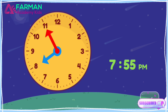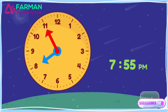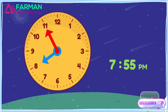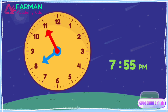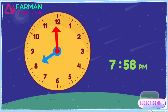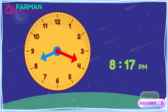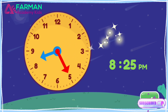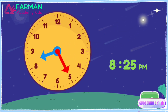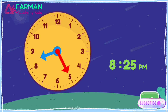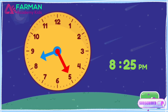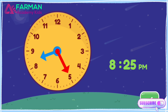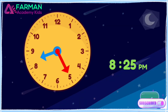Move the minute hand on the round clock to show 8:25 p.m. You made the clock show 8:25 p.m. Time for bed!